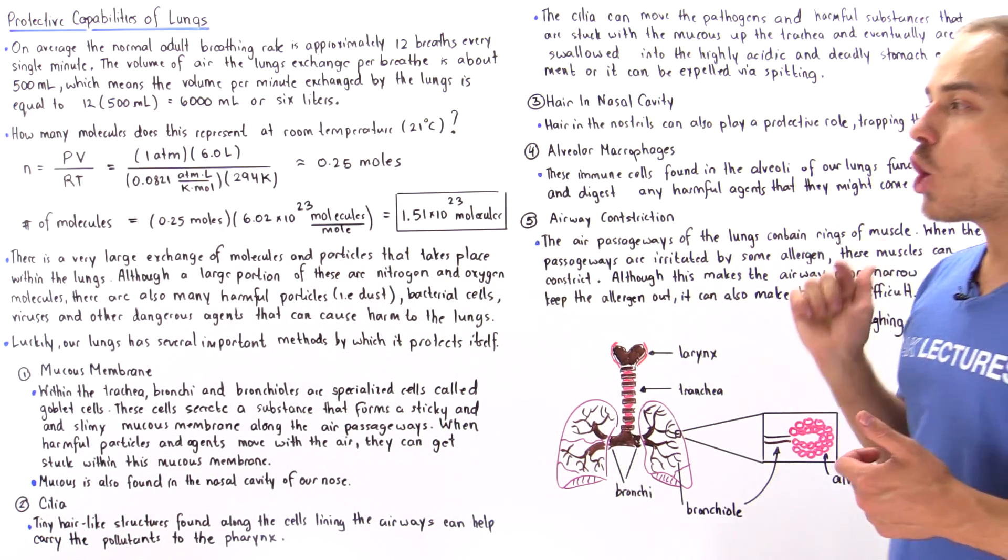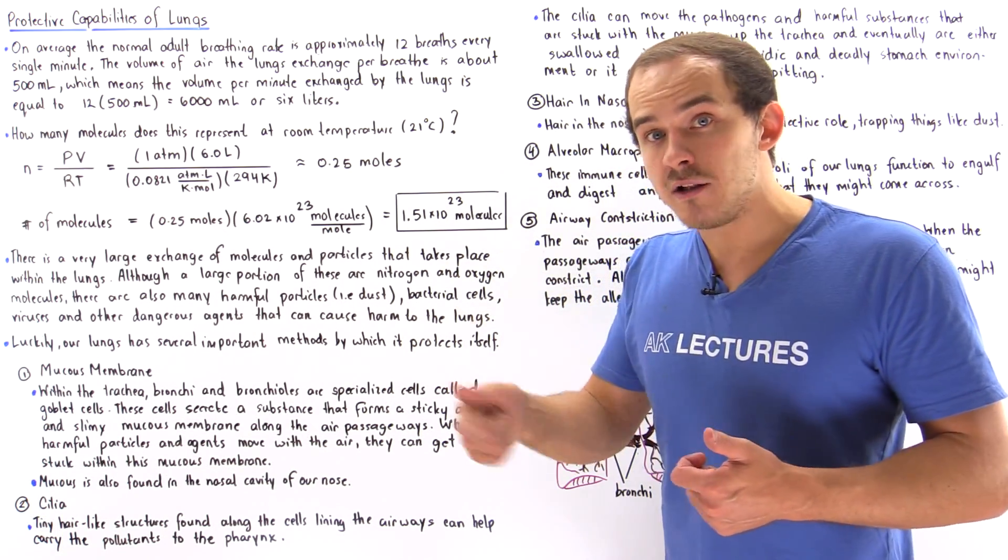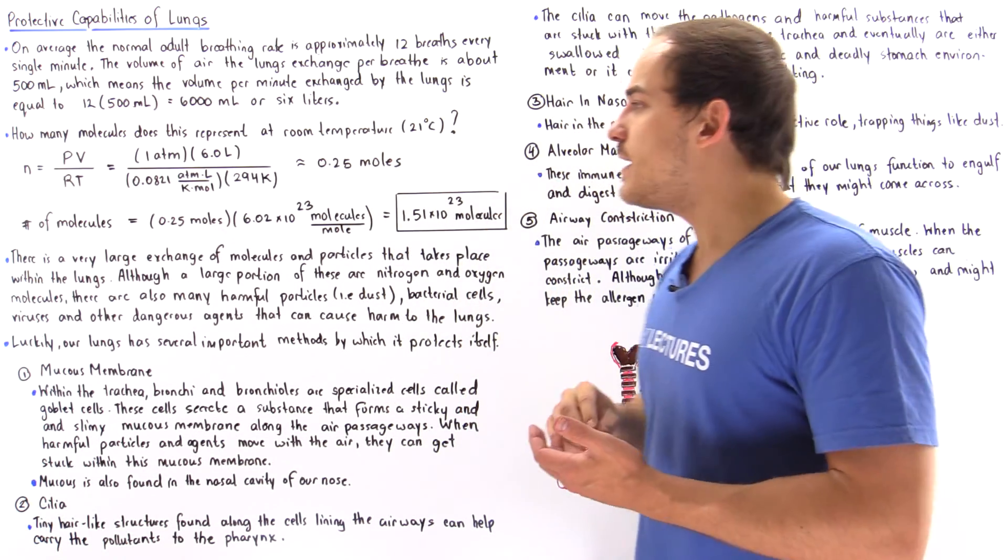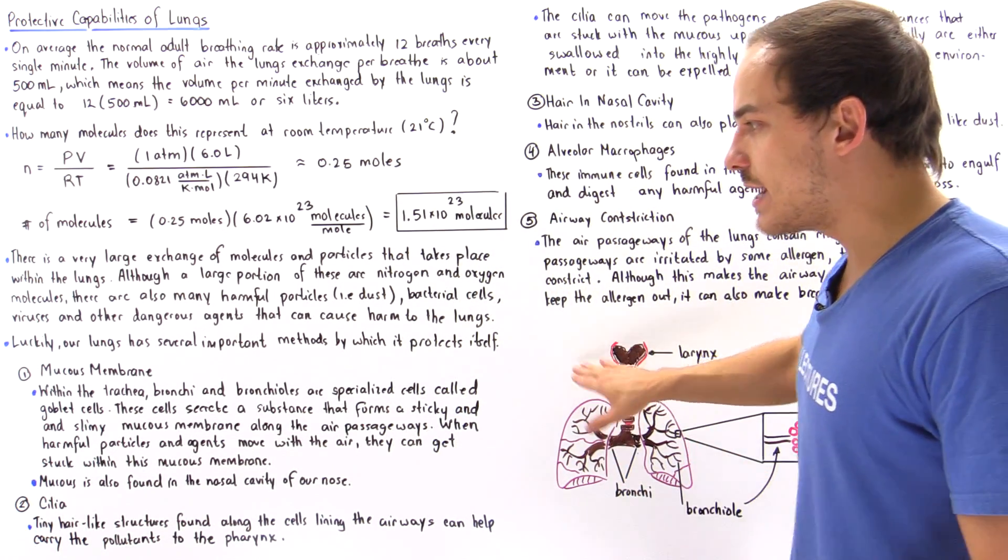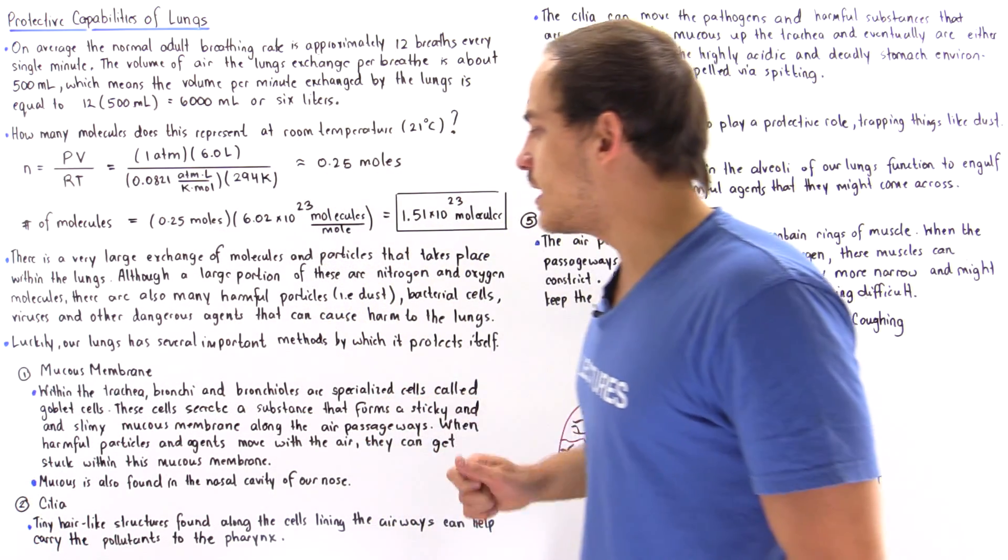Within the larynx, they can either go into the esophagus and into our stomach where the acidity will kill that harmful thing, or they can be expelled via the process of spitting.